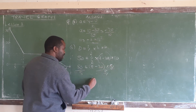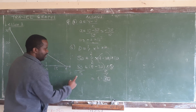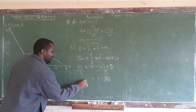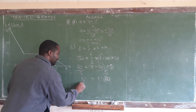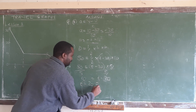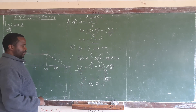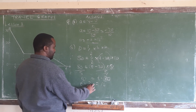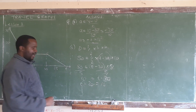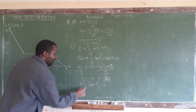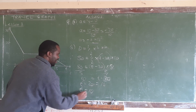Dividing both sides by 5 gives us: 10 equals t minus 20. So t minus 20 equals 10. We then add 20 to both sides to isolate t. Adding positive 20 to both sides: zero on the left, so t equals 10 plus 20.